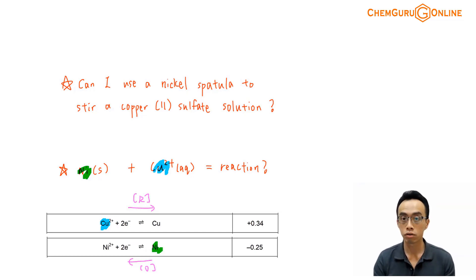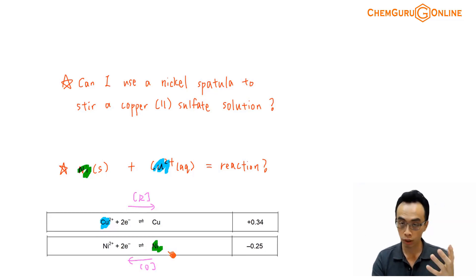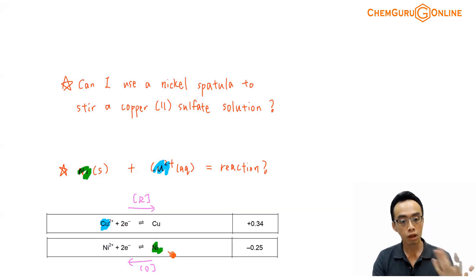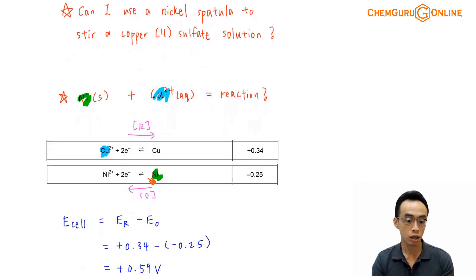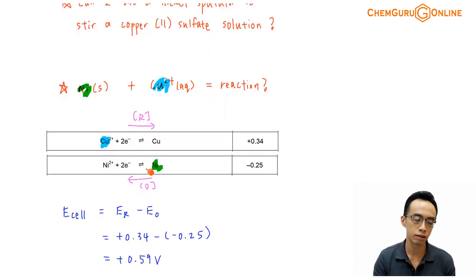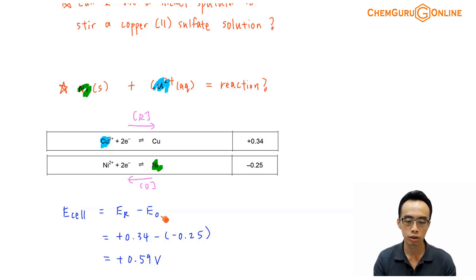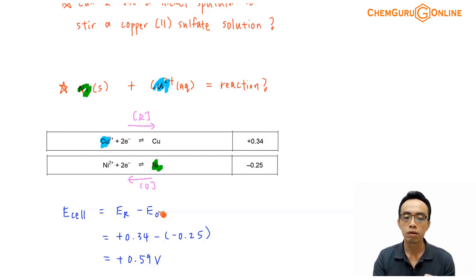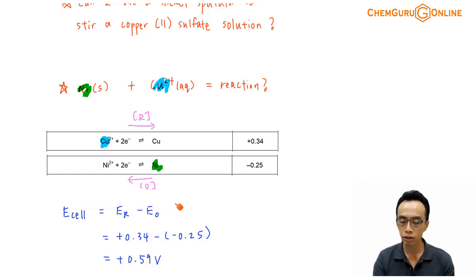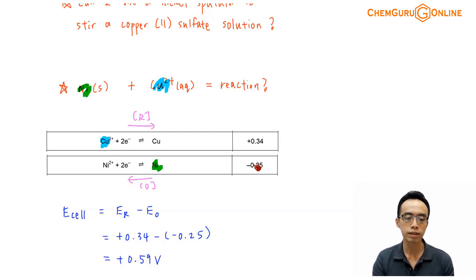We now have a redox reaction: reduction of Cu²⁺ and oxidation of nickel metal. We can determine the E°cell using the formula: E°cell = E°reduction − E°oxidation. E°reduction for Cu²⁺ is +0.34 V; E°oxidation for Ni is −0.25 V. Substituting: E°cell = +0.34 − (−0.25) = +0.59 V, which is a positive value.